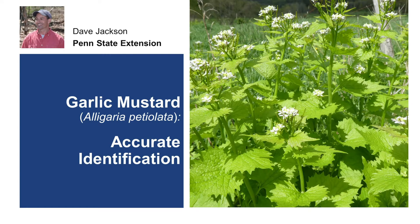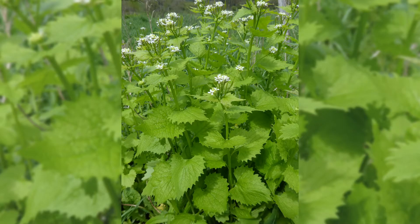Garlic mustard is an invasive herbaceous member of the mustard family originating from Europe and parts of Asia. The earliest known reports documented it growing on Long Island, New York in 1868. It is believed to have been brought over by early European colonizers and used for medicinal purposes and food.